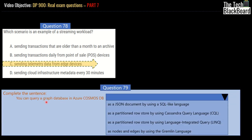Let's move on to question number 79. The sentence says: you can query a graph database in Azure Cosmos DB. The options are: as a JSON document using a SQL-like language, as a partition row store using Cassandra query language, as a partition row store using language integrated query, or as nodes and edges using Gremlin language. The correct answer is: as nodes and edges by using Gremlin language. Let me take you to the Microsoft Azure site to prove this answer.